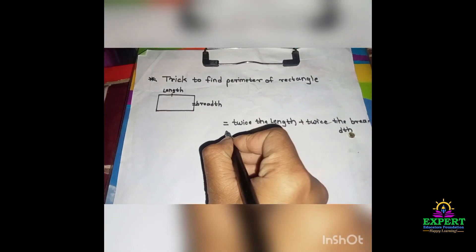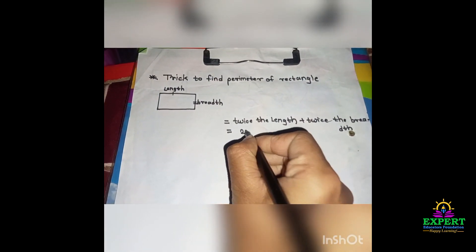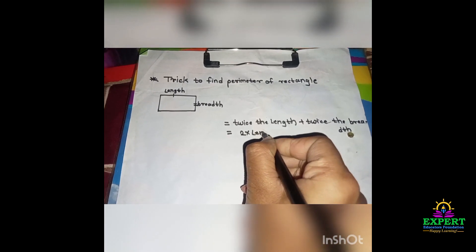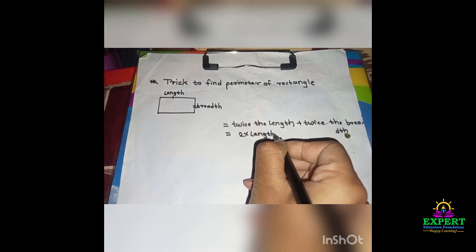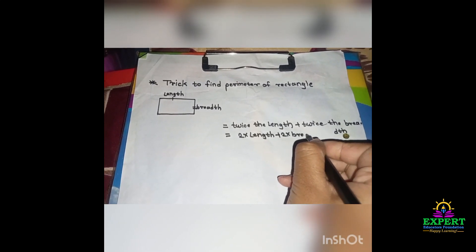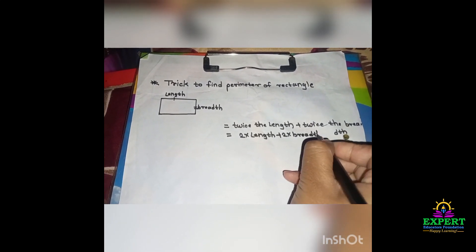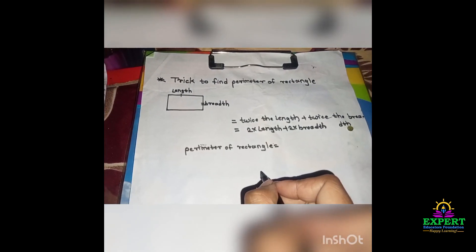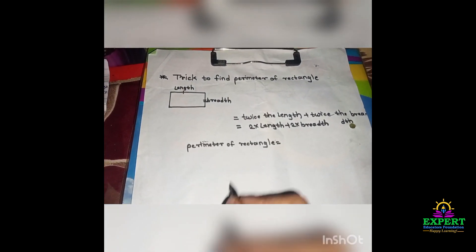This means 2 into length plus 2 into breadth. This is how the formula is made.